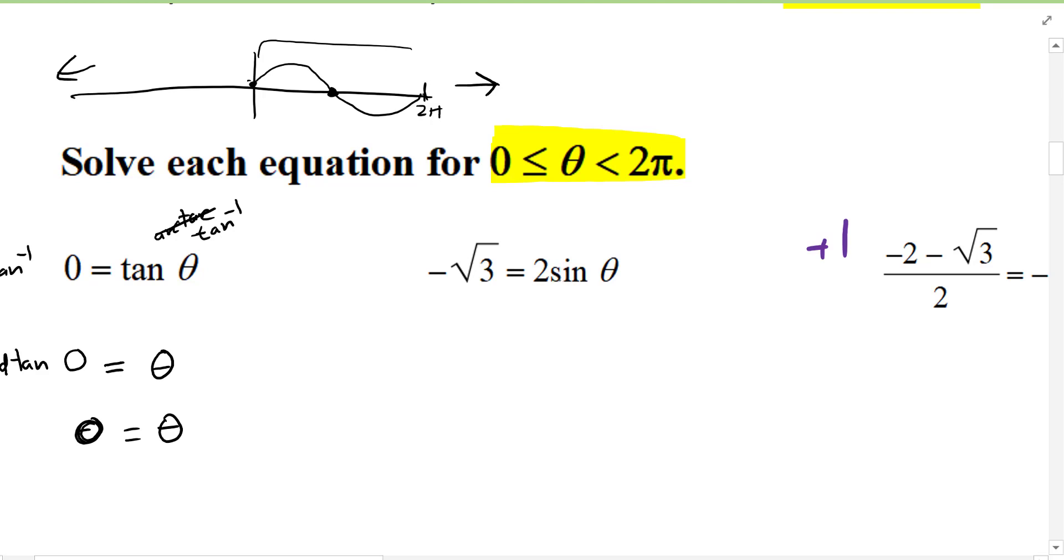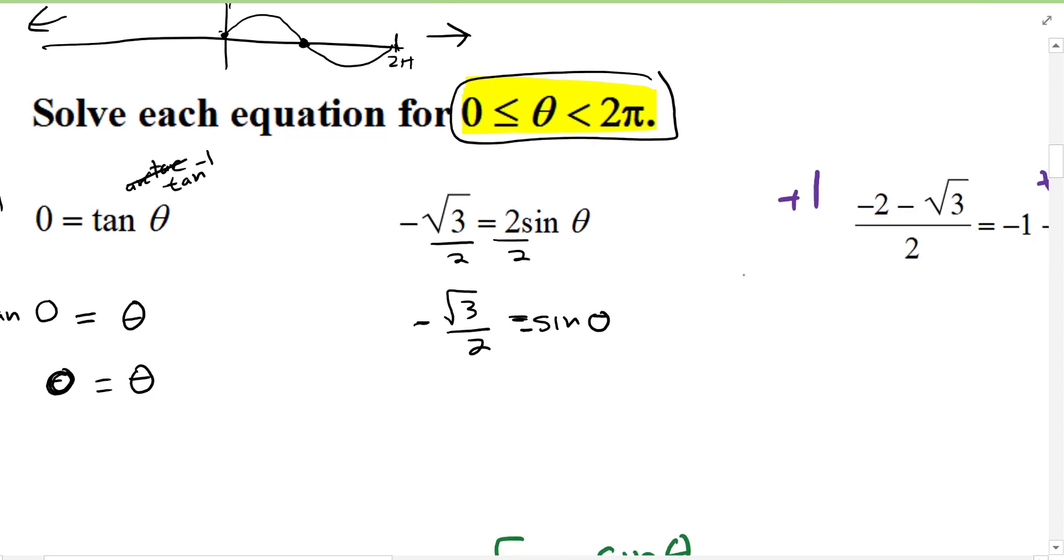For this equation right here you're going to divide both sides by two. This says sine of theta. Cool thing is most of the time on sine and cosine you can just look at the unit circle. Remember we have to look between zero and two pi. Sine is three pi halves up here at pi thirds. Cosine is one half, sine is root three over two, but we have a negative.